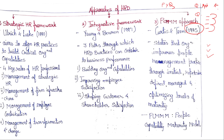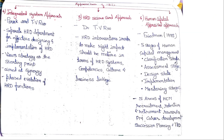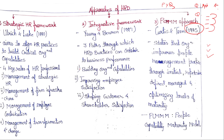Let's start the approaches of HRD. There are six approaches: the first one is strategic HR framework, integrative framework, PCMM that is your people capability maturity model, integrated system approach, HRD scorecard approach, and human capital appraisal approach. The human capital appraisal approach and integrated approach are PYQ topics. Arranging the following approaches as per the year is also a PYQ. First is the strategic HR framework.